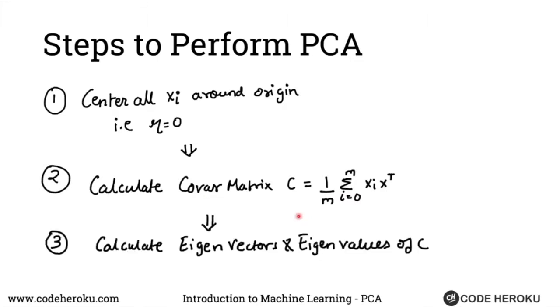Third, we already saw was given this covariance matrix, we want to calculate the eigenvectors and the eigenvalues of C, so that the eigenvectors will give us the direction where we have the maximum variance.